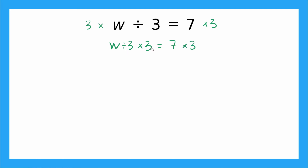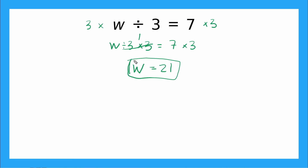So it's W divided by three, times three, equals seven times three. Divided by three times three turns to just one, so I have W times one — which I write as just W — equals seven times three, which is 21. Let's check with substitution: plug in 21 for W, so 21 divided by three equals seven. 21 divided by three is seven, which equals seven. We got it right.